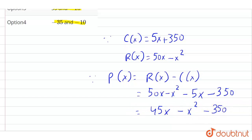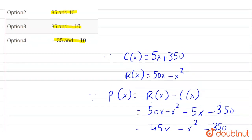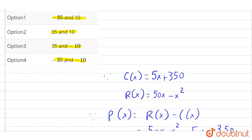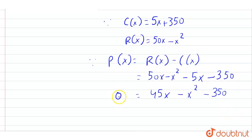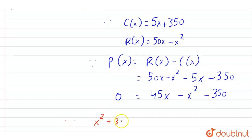And we know for finding the break-even point, at break-even point, our P(x) equals 0. So this equation will be equals to 0. Now we will find the roots of this equation.